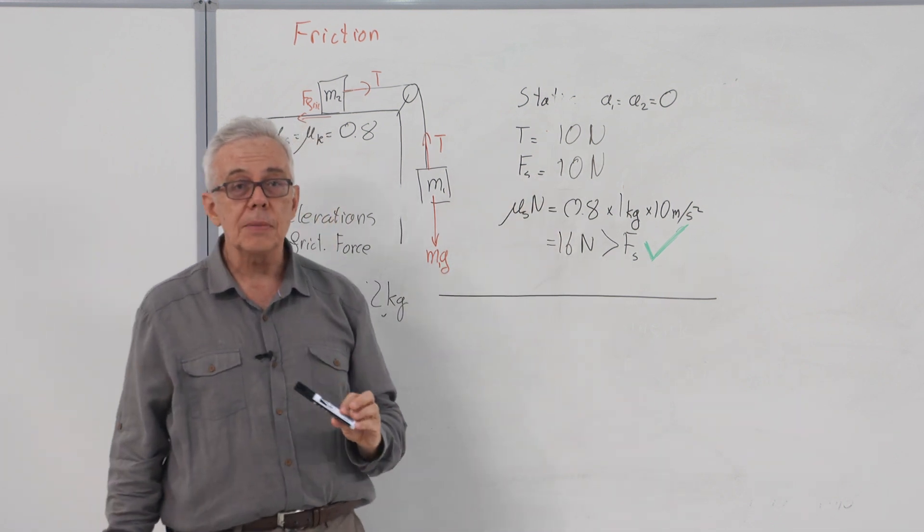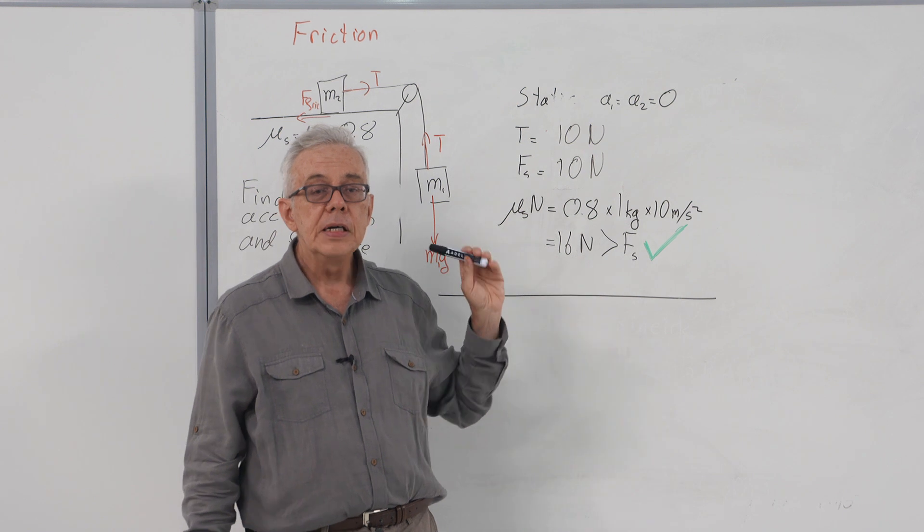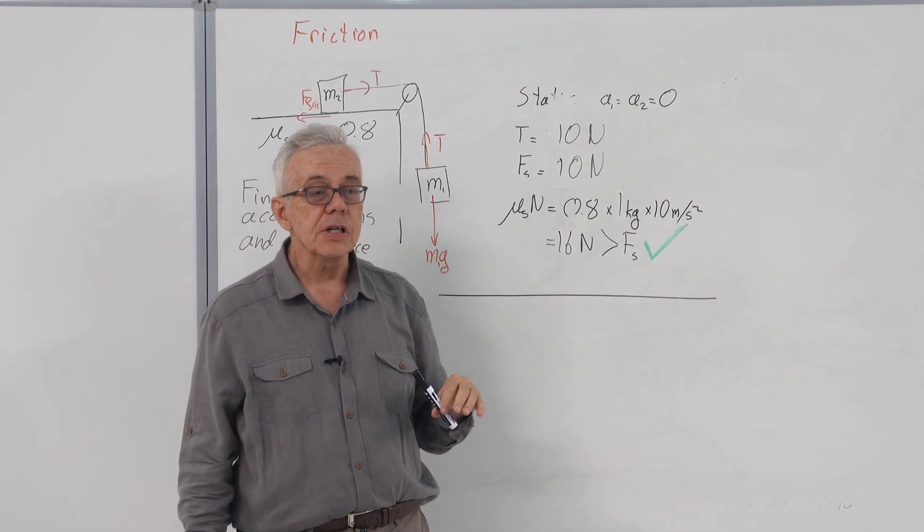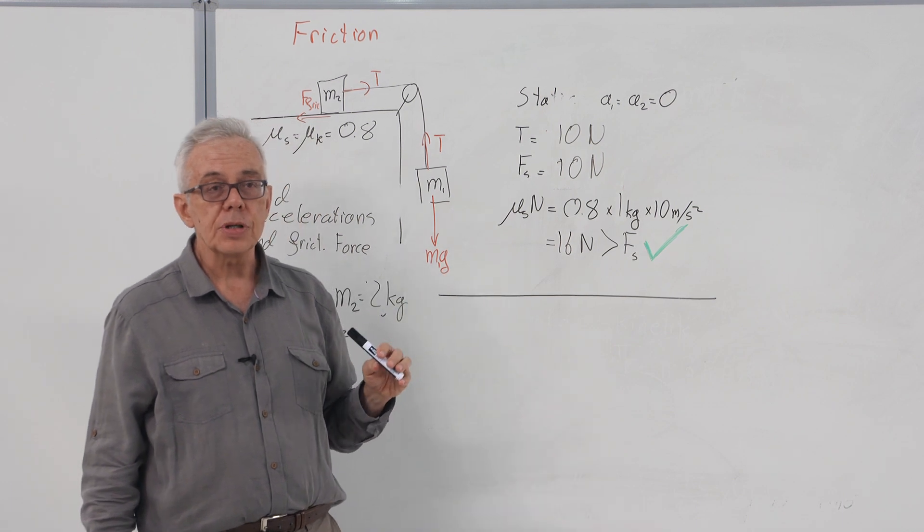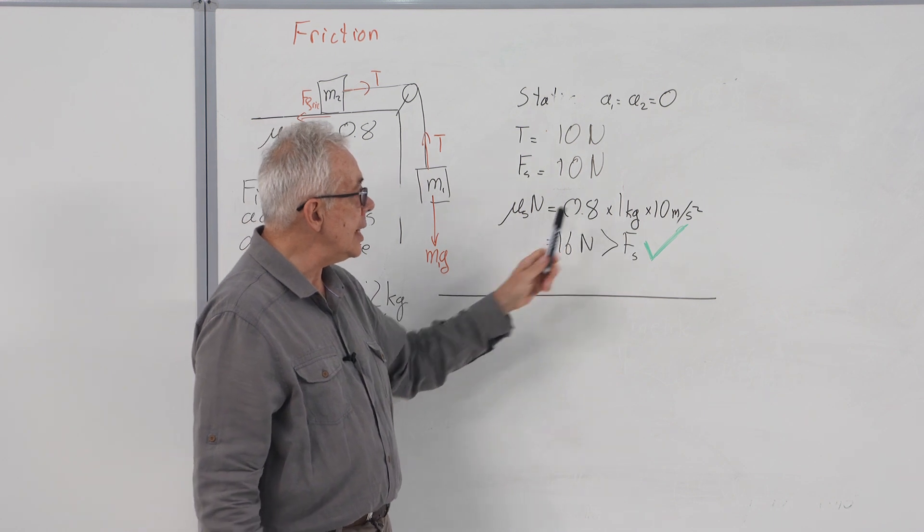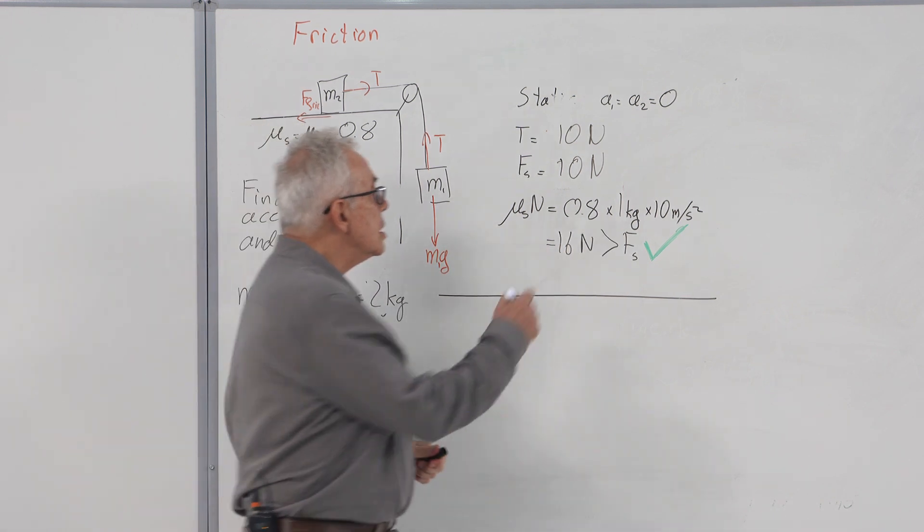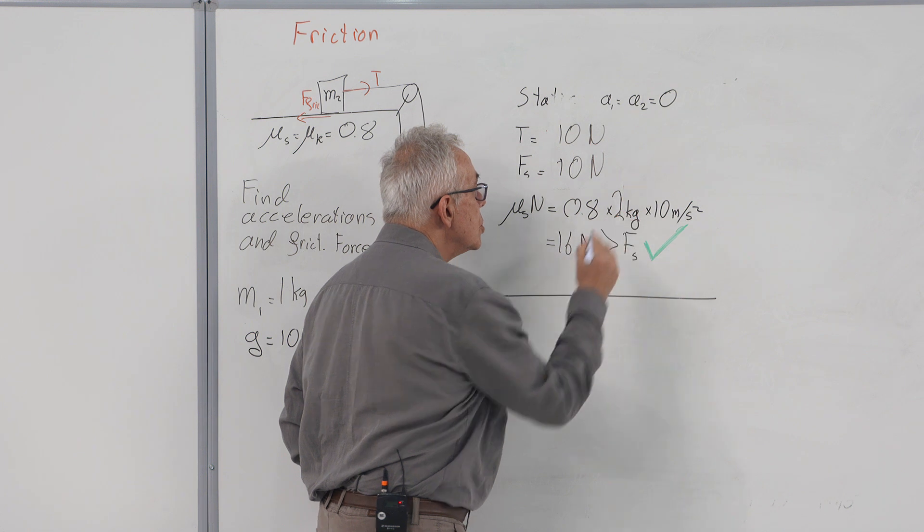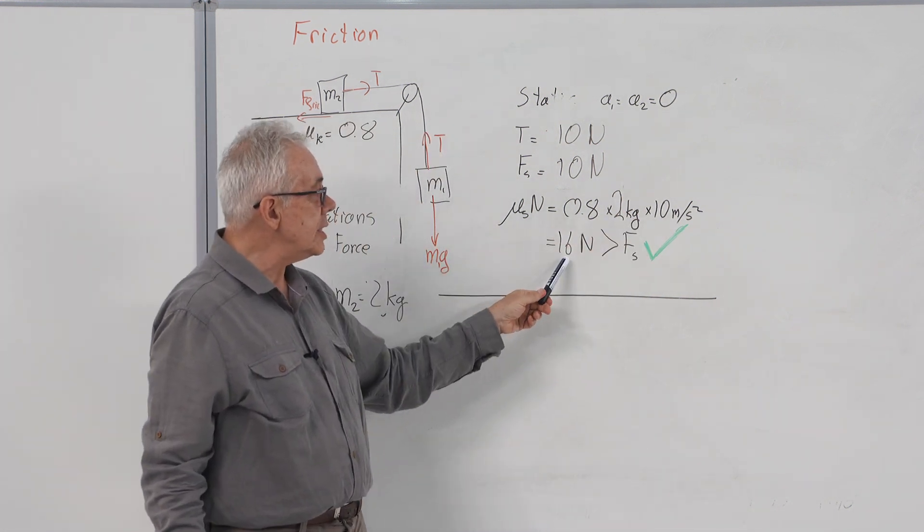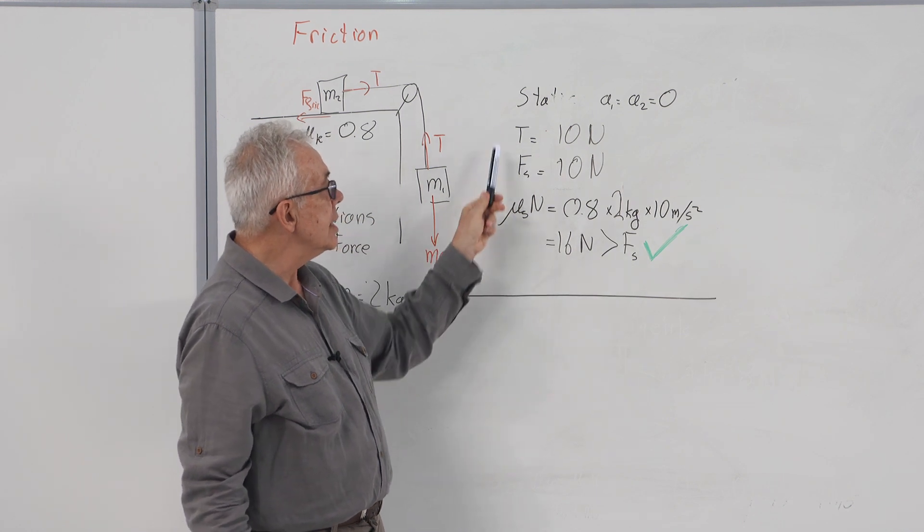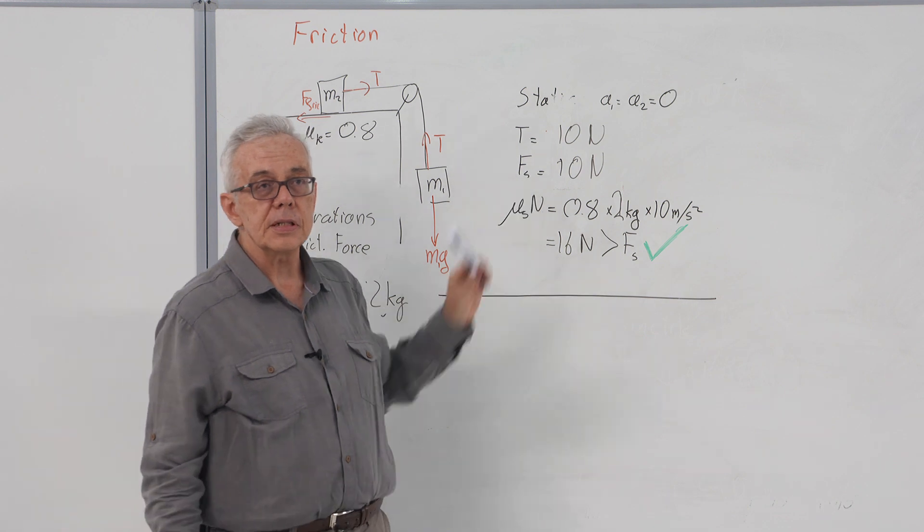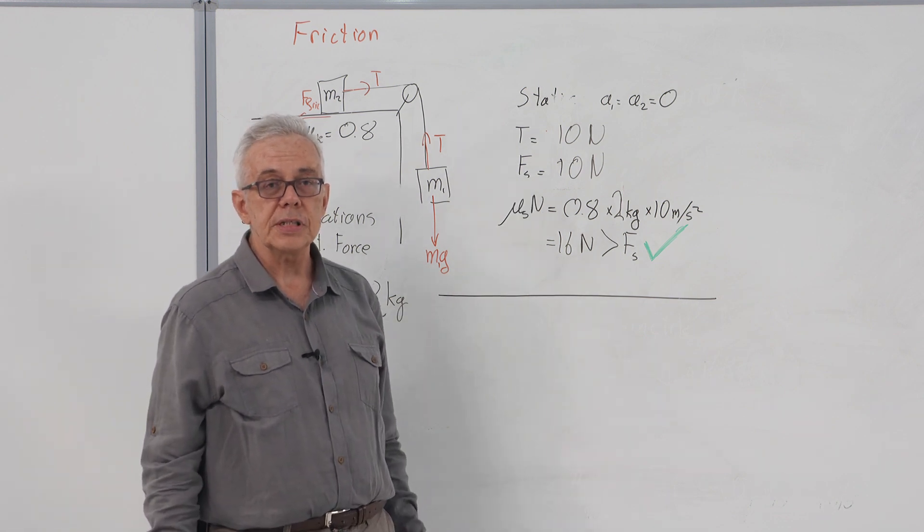Now here, our job is not finished. We must check if this satisfies our condition, namely, frictional force cannot be more than mu times normal. So mu times normal is 0.8 times 2 kilograms times 10 meters per second squared, which is 16 newtons and larger than the actual static force, and this problem is acceptable. This solution is acceptable.